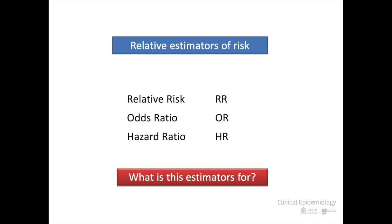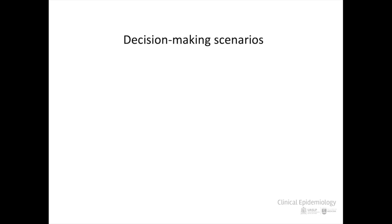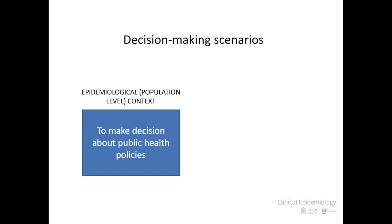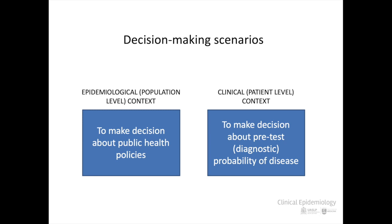What are these risk estimators for? What are the scenarios where this information contributes to the decision-making process? Knowing the way that the risk of suffering a disease is determined is useful in two medical scenarios. The first has to do with public policy decisions that affect the population, a territory of epidemiology. The second are clinical scenarios, and as we will see in the next unit, it is related with the determination of the pre-test probability — the risk of disease before performing a diagnostic test.